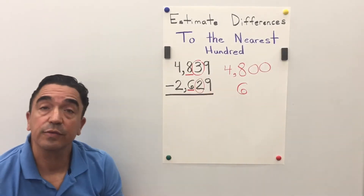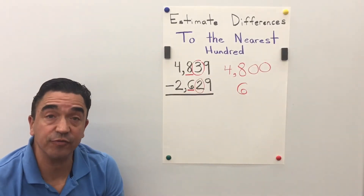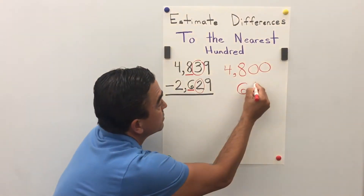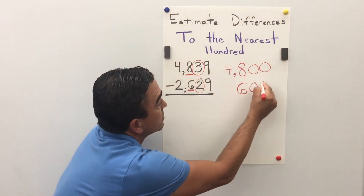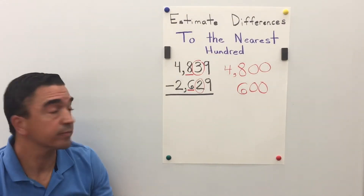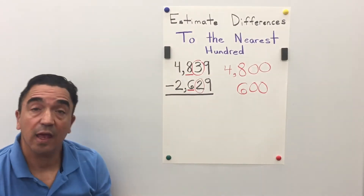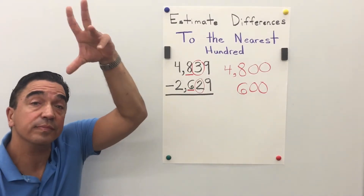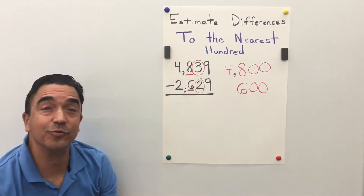The two digits after become zeros, and the two in the thousands place we just drop it.